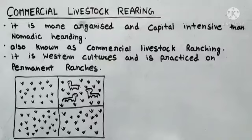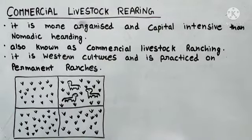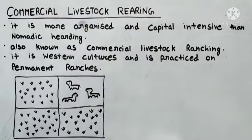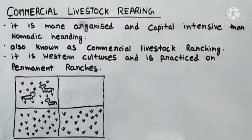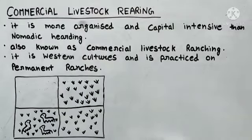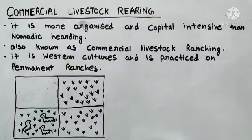Har ek parcel ke aaspaas tumne fencing kar rakhi hai. Jaise is image mein jo ranch hai uske four parcels hain aur in charon parcels ki boundary pe fencing kar rakhi hai. Jab ye animals apne first parcel ki grass kha lete hain, to unhe doosre parcel mein shift kar diya jata hai. Jab second parcel mein bhi ghaas khatam ho jaati hai to third parcel mein shift kar diya jata hai. Notice karo — hamare first parcel mein dubara se grass ug chuki hai. Jab third parcel khatam ho jaayega to fourth mein shift karenge, fourth mein khatam ho jaayega to first mein.